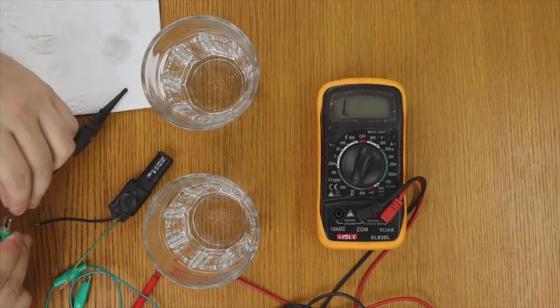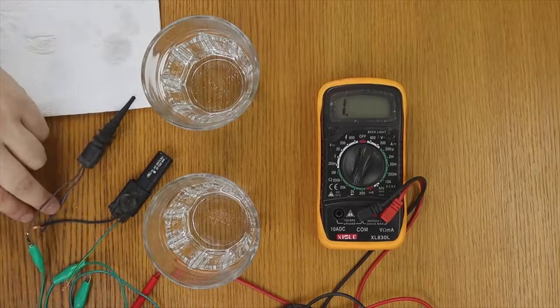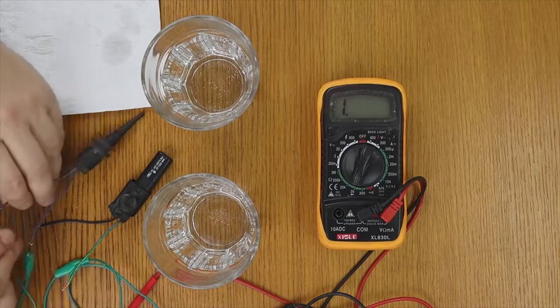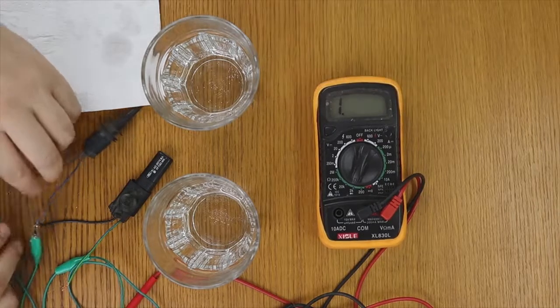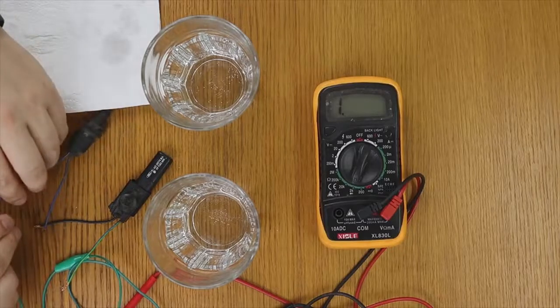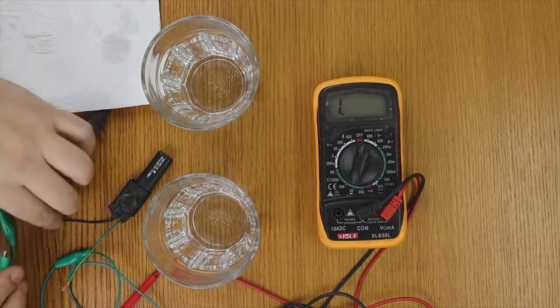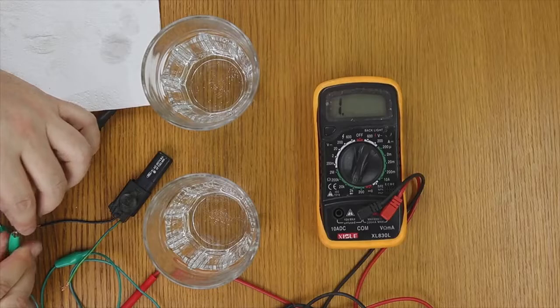We are going to connect it to the multimeter in ohms. Let's see if it works or not. It is marking one. It seems that it does not work. Now we change the polarity, just in case. And you see that it continues to mark one. This sensor is definitely faulty. This must be changed.